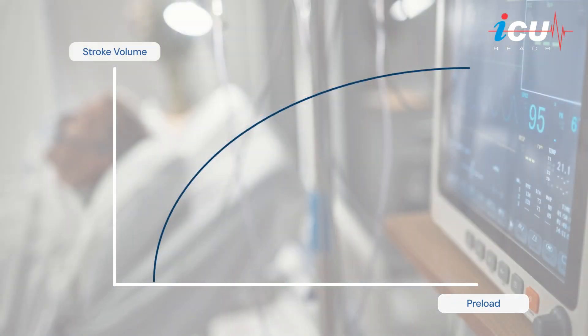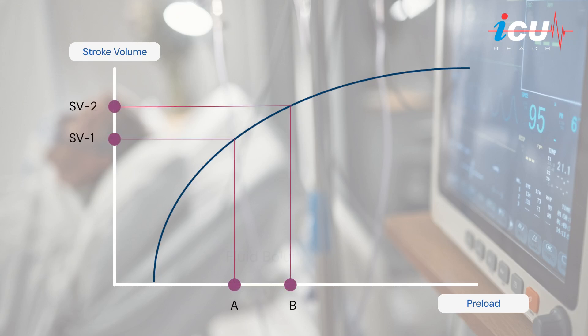To determine where a patient is on the Frank-Starling curve, we need to measure stroke volume at two different preload levels. One common method is to give a fluid bolus and observe the percentage of stroke volume improvement. However, if the patient doesn't respond to the fluid, it can still lead to fluid overload, since the bolus has already been administered.